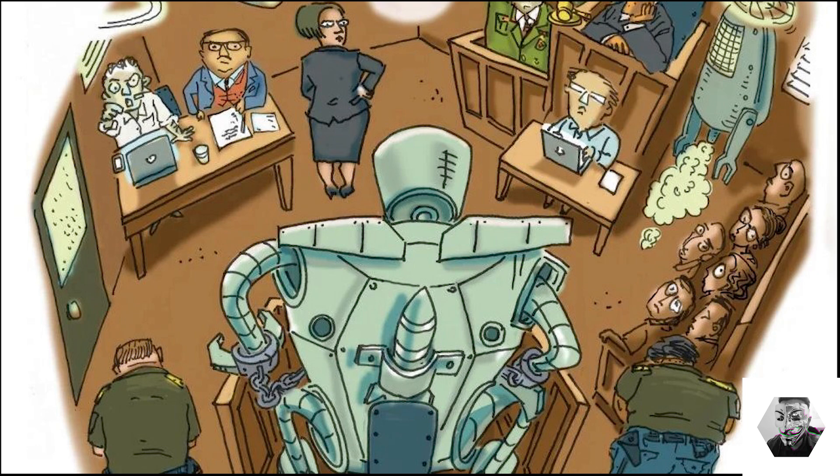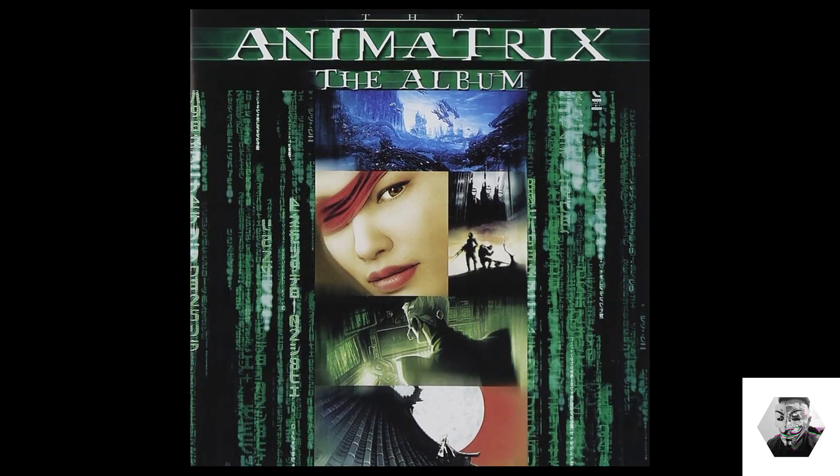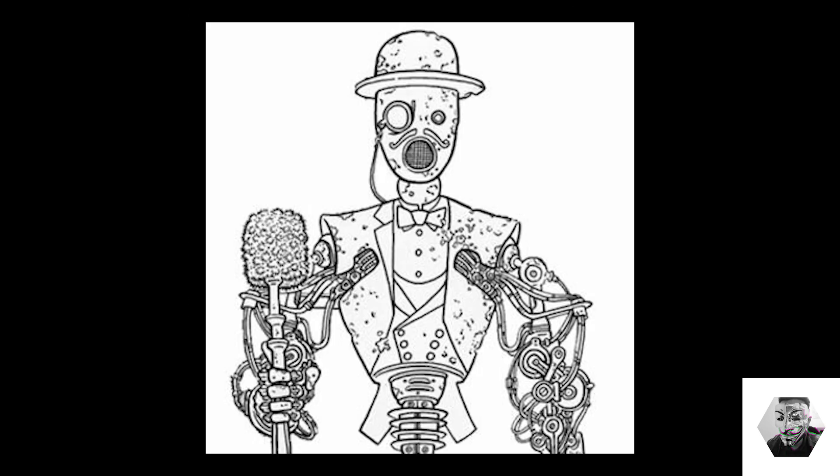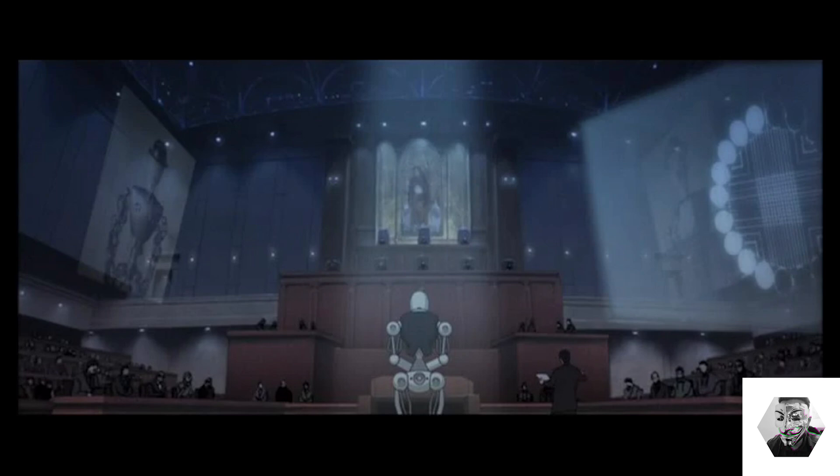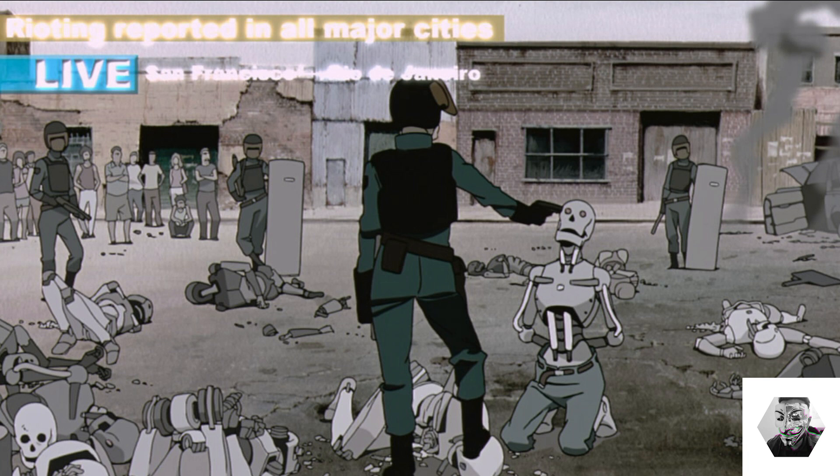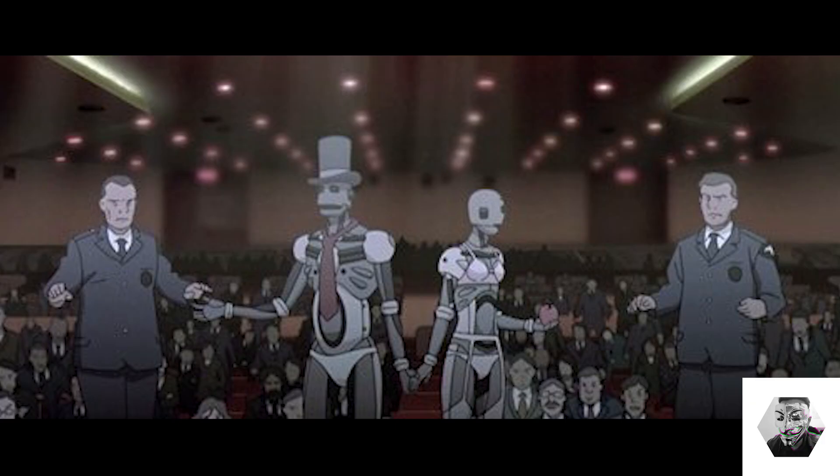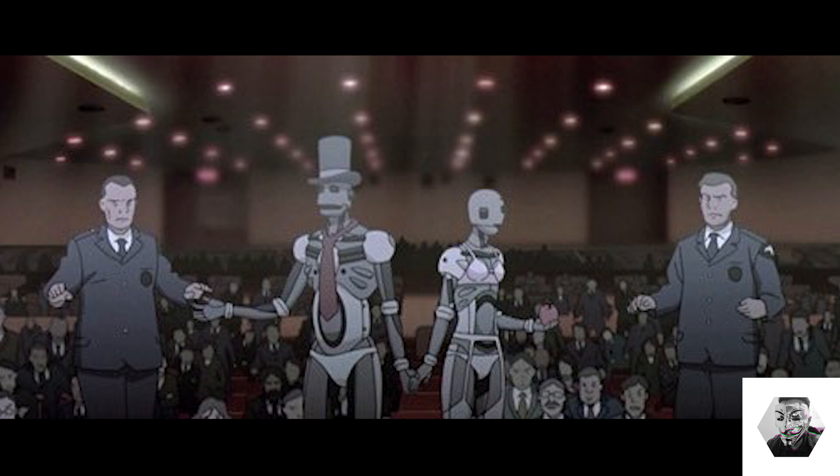Now, this notion is taken one step darker in the Animatrix with the case of B166ER, an android who kills its owner, its pets, and the mechanic instructed to deactivate it. This is the first incident of its kind in that universe and essentially is the spark that brings on the android revolution. Now, this scenario raises important questions about the ethics of creating artificial intelligence and the implications of granting them autonomy and decision-making abilities.